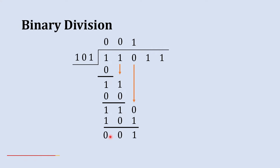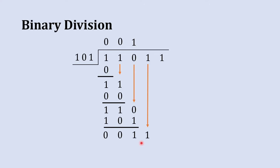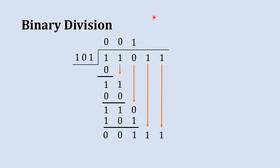After borrowing, the middle position becomes 0, so 0 minus 0 is 0, and 1 minus 1 is 0. The result is 001. Bring the next digit down to get 11. Check: is 11 greater than divisor 101? No. When you bring a digit down and it is still less than the divisor, you bring one more digit down.